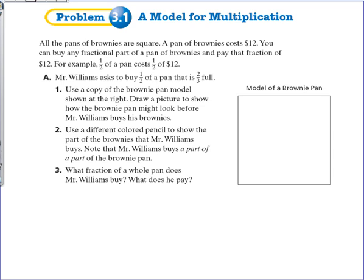Now, Mr. Williams comes up to these people selling the brownies and he says he wants to buy half of a pan that is two thirds full. So we should draw a picture of a brownie pan that has two thirds of it full.